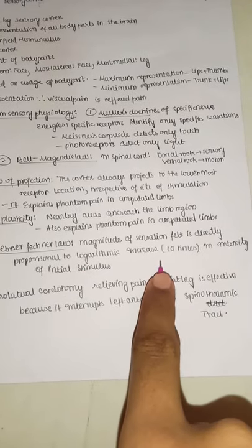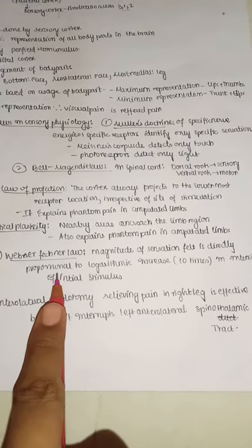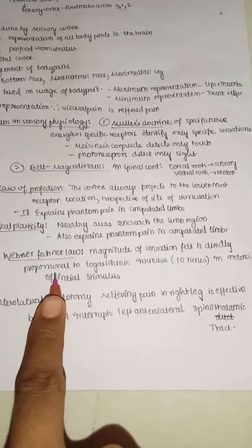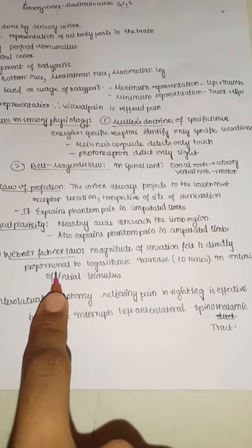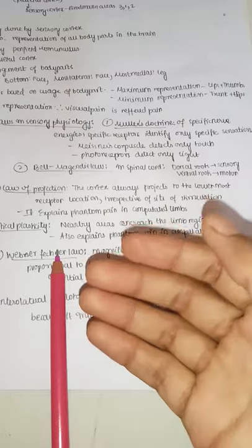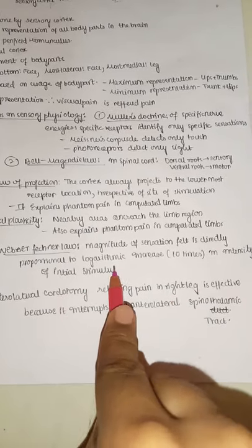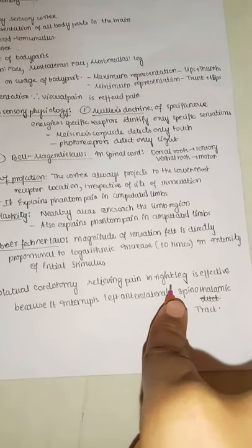Weber-Fechner law: the magnitude of sensation felt is directly proportional to the logarithmic increase — specifically a 10-times increase in the intensity of the initial stimulus. For example, if holding 100g and only 1g is added, we cannot sense it; but if 1000g (10 times) is added, we can sense the change.